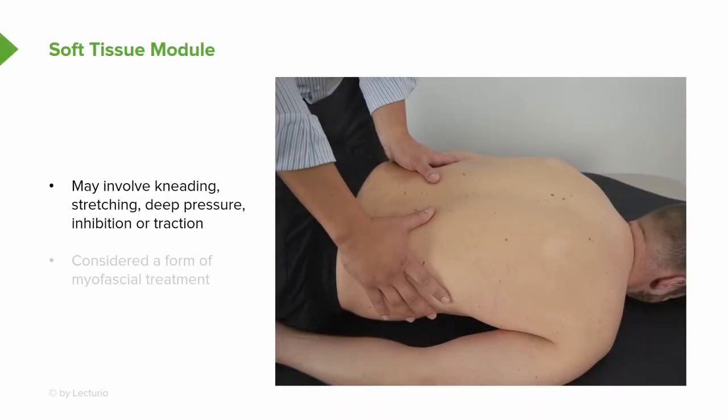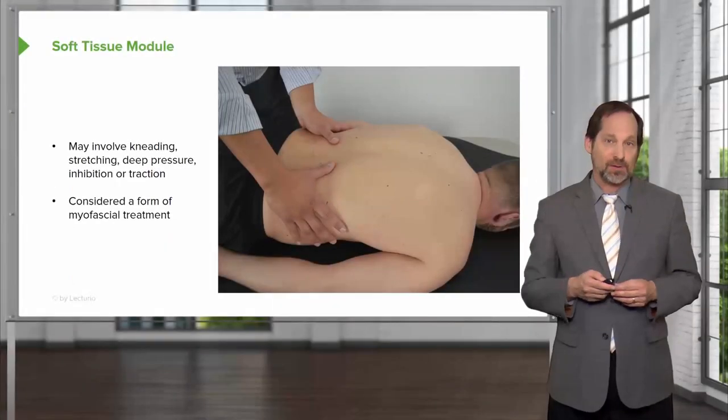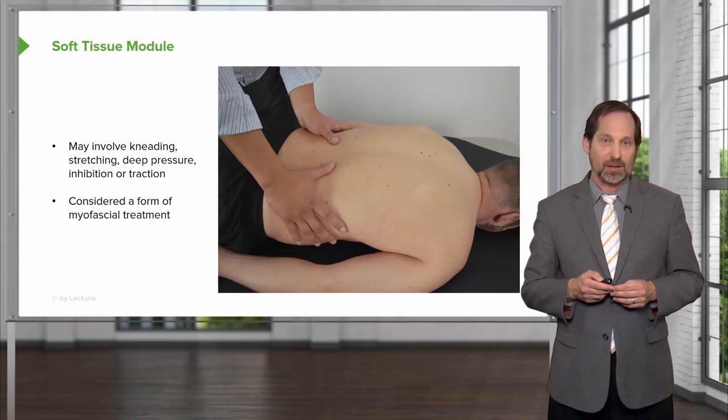Soft tissue usually needs stretching pressure, may involve spray and stretch in chemicals, and other ways of enhancing motion. It is a form of myofascial treatment which we talk about separately, but because so much soft tissue is done, we include it as a separate module. Those are the types of manipulation that are taught in osteopathic medical schools.